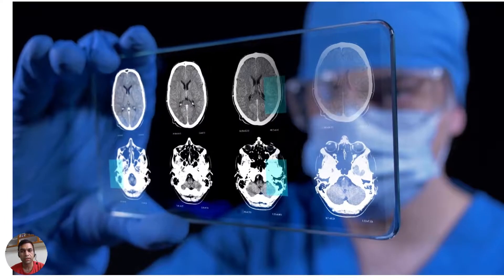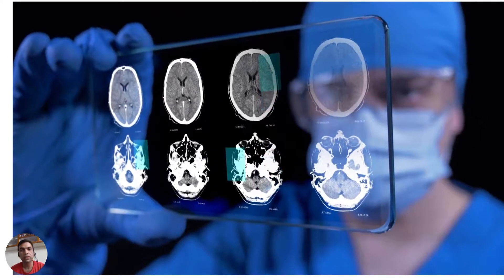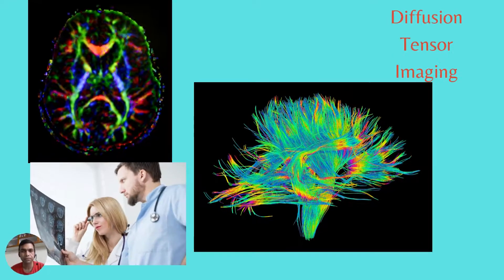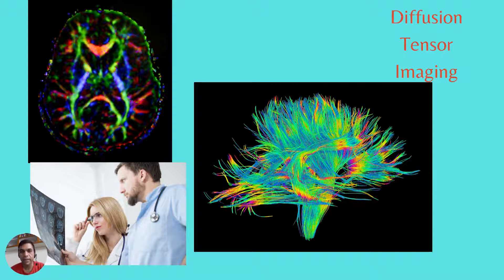The next step in evaluation is diffusion tensor imaging. In the image you can see the white fiber tracts which connect the motor areas on the surface of the brain to different parts of the body. If a tumor is located near these tracts and we damage them while operating, there is a possibility of the patient losing power. So we perform subcortical mapping during the surgery, the details of which will be explained in the next video.